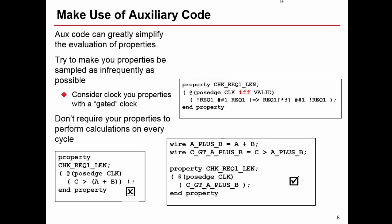And the final tip is to make use of auxiliary code. Every time you hear the word check, it doesn't mean you have to implement something with SVA alone. Auxiliary code can greatly simplify the evaluation of properties, making it more effective in terms of the tool, give you a result in a quicker time. In addition to that, try and make sure that your properties are sampled as infrequently as possible.